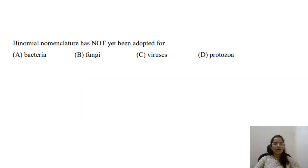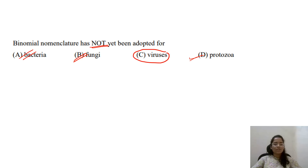Binomial nomenclature has not yet been adopted for — this is a very easy question. Bacteria, fungi, and protozoa all have binomial nomenclature, but viruses do not, because they are acellular and there is still confusion about whether they are living organisms or not. The answer is obviously viruses.